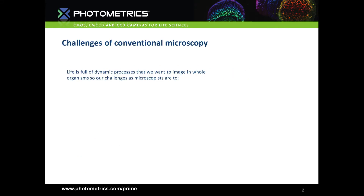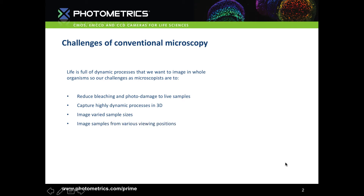Firstly, let's set out what the challenges are of conventional light microscopy so we know what we need from a microscope. Life is full of dynamic processes, so in order to visualise them we need to image live cells or organisms. The first thing we want to do is avoid photobleaching and photodamage to live samples so we can be sure that the processes we're following occur in healthy living cells.